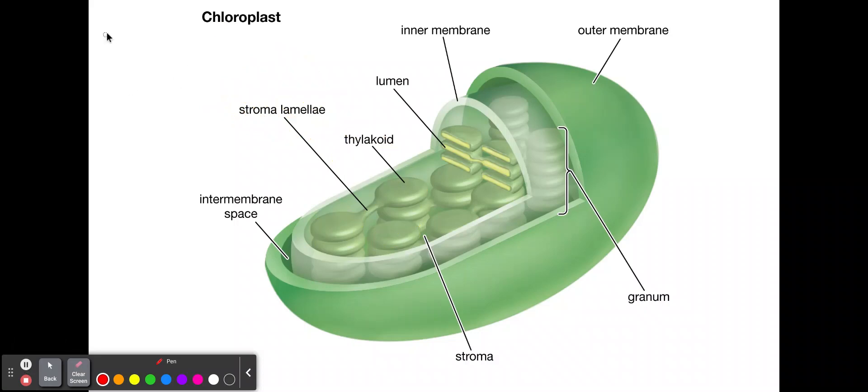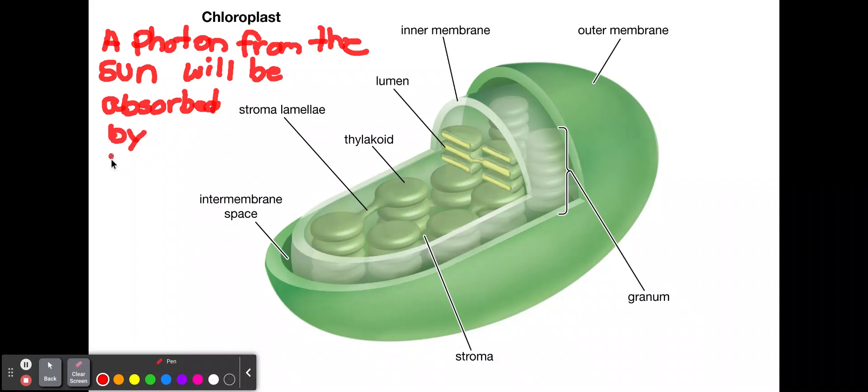So we'll just write it over here. A photon, light, photon from the sun, obviously the sun, and it's going to be absorbed, will be absorbed by chlorophyll, which is in this membrane, the thylakoid membrane in the chloroplasts.